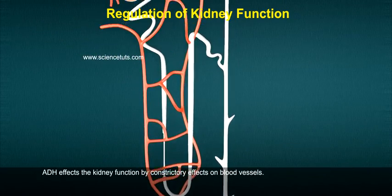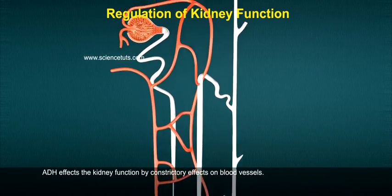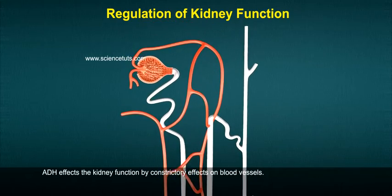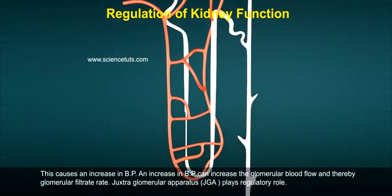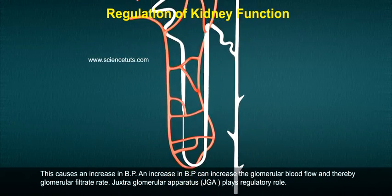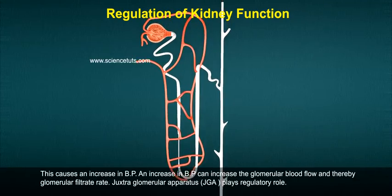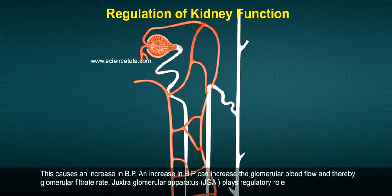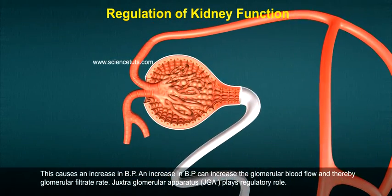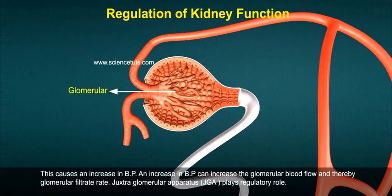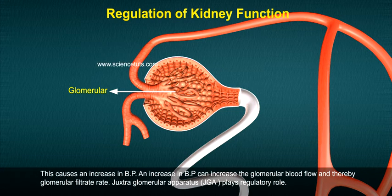ADH also affects kidney function through constrictory effects on blood vessels. This causes an increase in blood pressure, which can increase the glomerular blood flow and thereby the glomerular filtration rate.